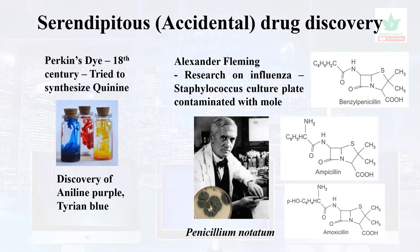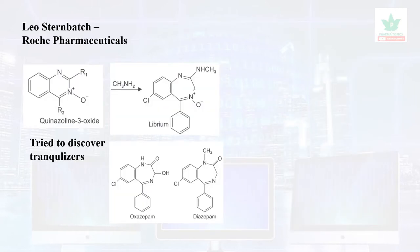The next classical example is Alexander Fleming. He was doing research on influenza using a Staphylococcus culture plate when it was accidentally contaminated with the mold Penicillium notatum. He found a zone of inhibition, and from that, many lead compounds were identified and developed into drugs.